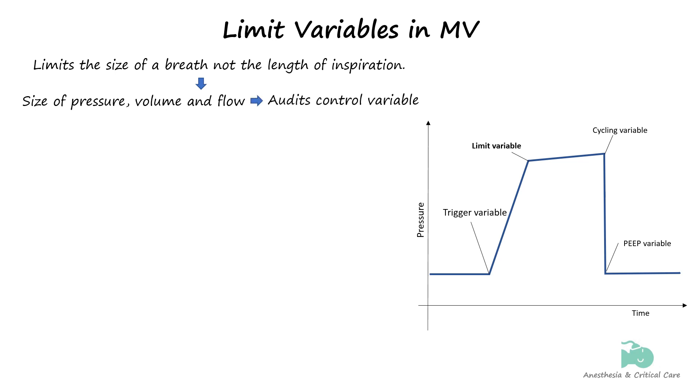Control variables are parameters that the clinicians aim to achieve during the breath. For instance, during volume control ventilation, the clinician sets a tidal volume as a control variable. The ventilator will make sure that the patient receives the set tidal volume, but doing so might also increase the pressure. Limit variable is set to make sure that the pressure is also kept in check.